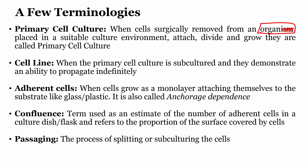The second term is cell line. When the primary cell culture is subcultured and demonstrates an ability to propagate indefinitely — you can keep on growing the next subset of cells — it is called a cell line. Next is adherent cells: when a cell grows as a monolayer, attaching itself to a substrate like glass or plastic. This is also called anchorage dependence.